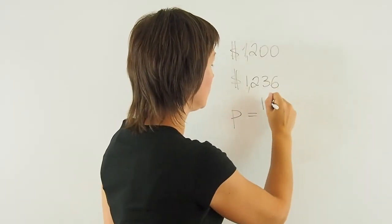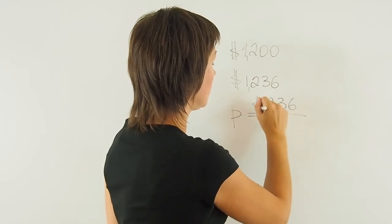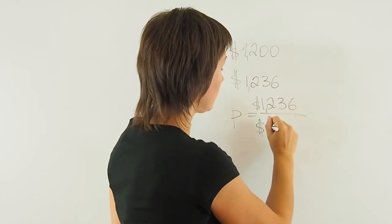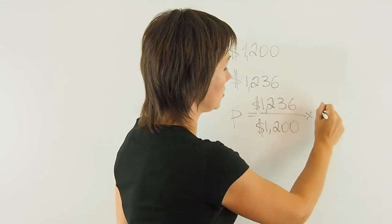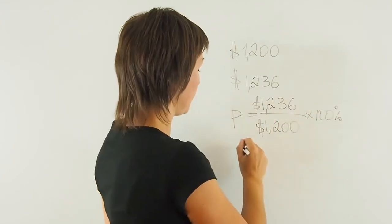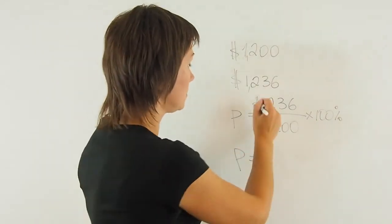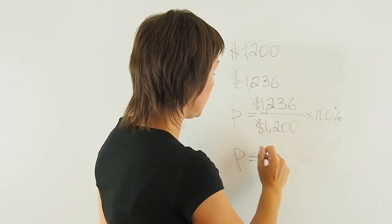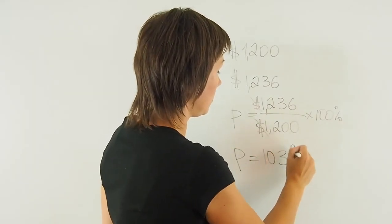the final amount at the end of the year that you have over the original amount, the initial amount, times 100%. P equals, dollars will eliminate, and you have 103%.